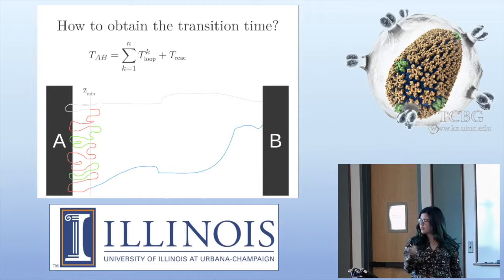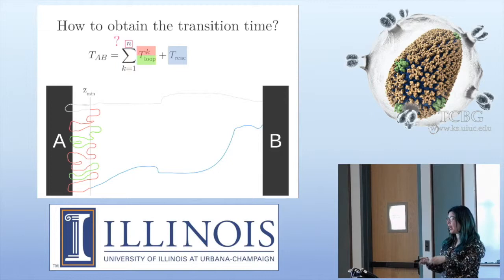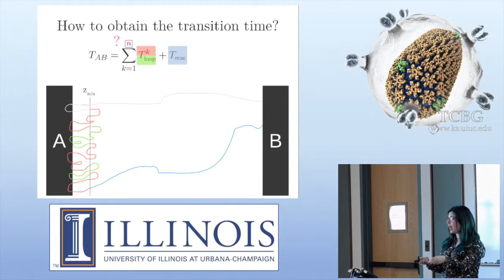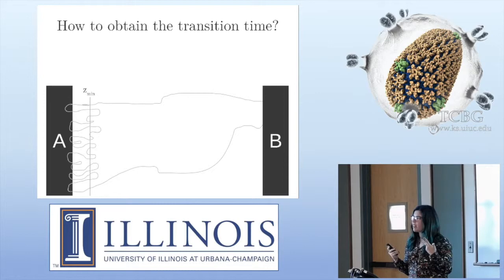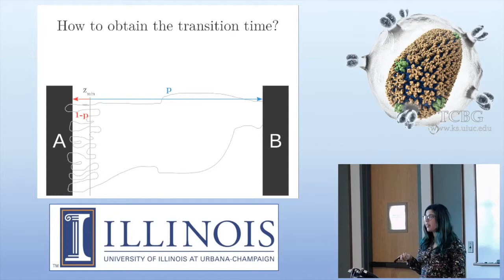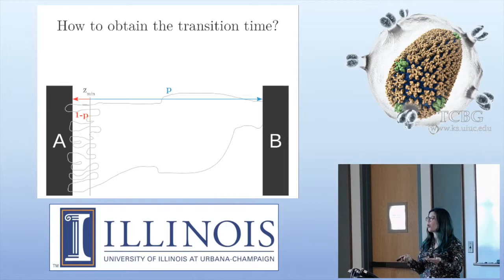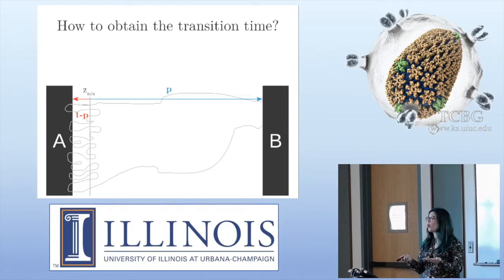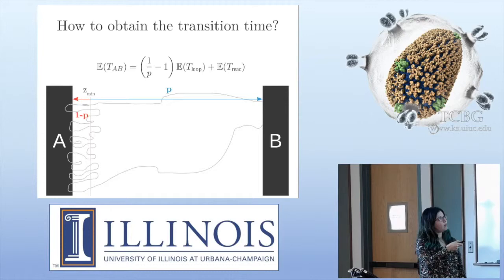The total time is the sum of the loop times plus the time of the last trajectory. The problem is we don't know the number of loops. But if every time we pass the Z_min level we have two options — go to B or come back to A — this is a Bernoulli law. The probability to go to B is p, and the expected number of loops is 1/p minus 1. This p is obtained with AMS.